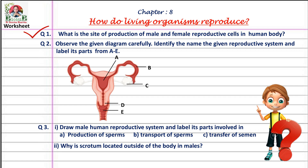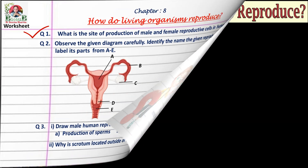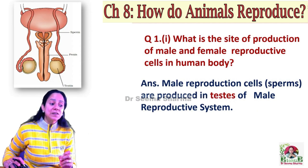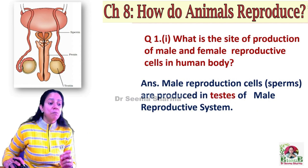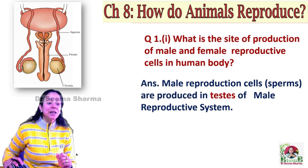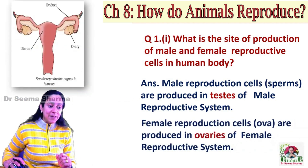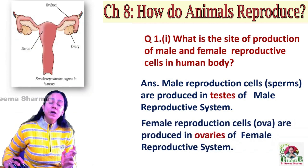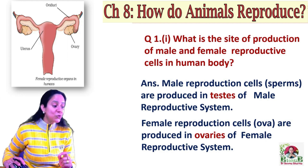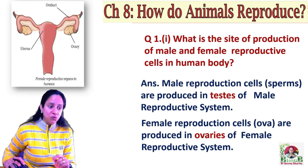What is the site of production of male and female reproductive cells in the human body? Male reproductive cells — sperms — they are produced in the testes of the male reproductive system. So the site of production of male reproductive cells is testes, and the site of production of female reproductive cells is ovaries. That is how you have to attempt this question.